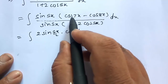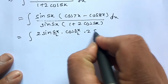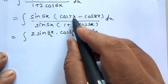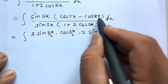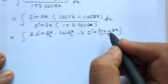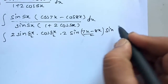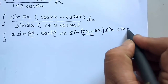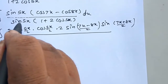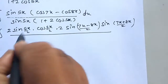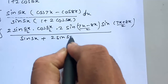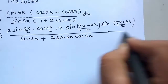Now we are using the formula cos C minus cos D equals 2 times sin((7x - 8x)/2) into sin((7x + 8x)/2). Multiply sin of 5x inside the bracket. It is sin of 5x plus 2 times sin 5x into cos of 5x dx.